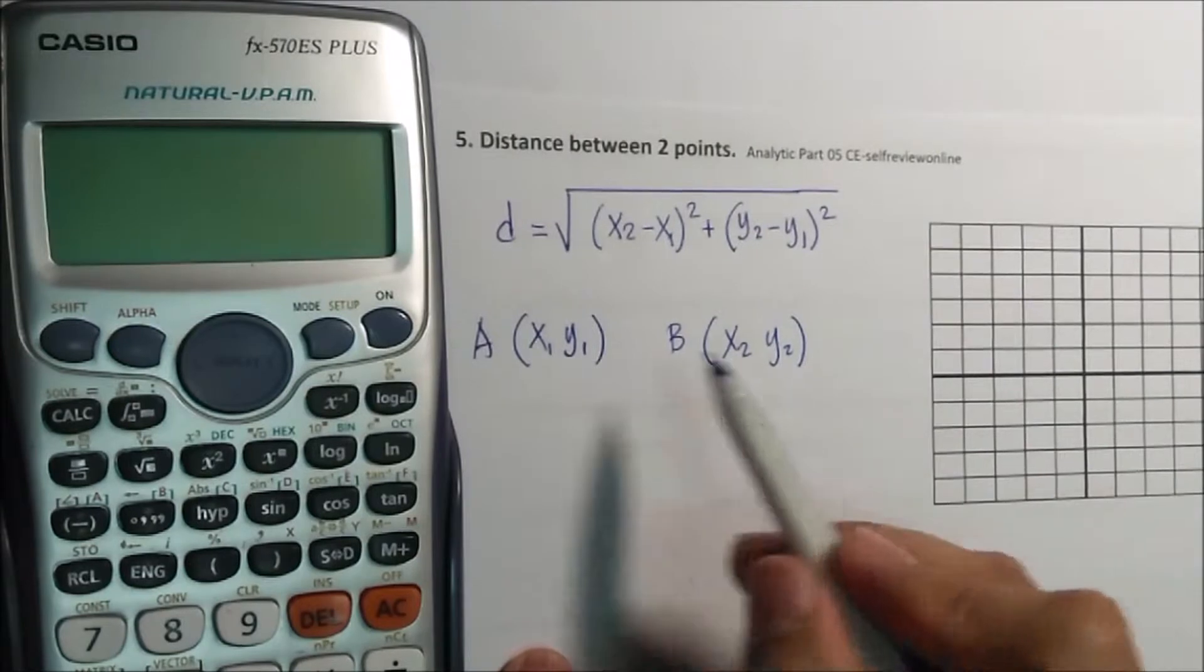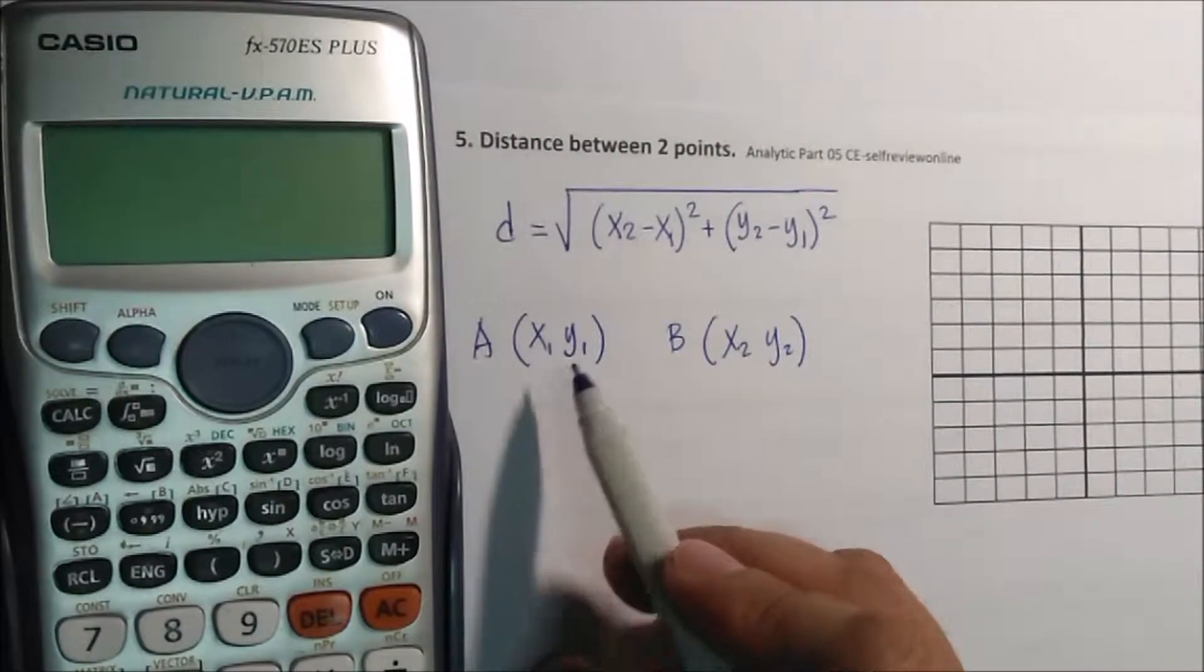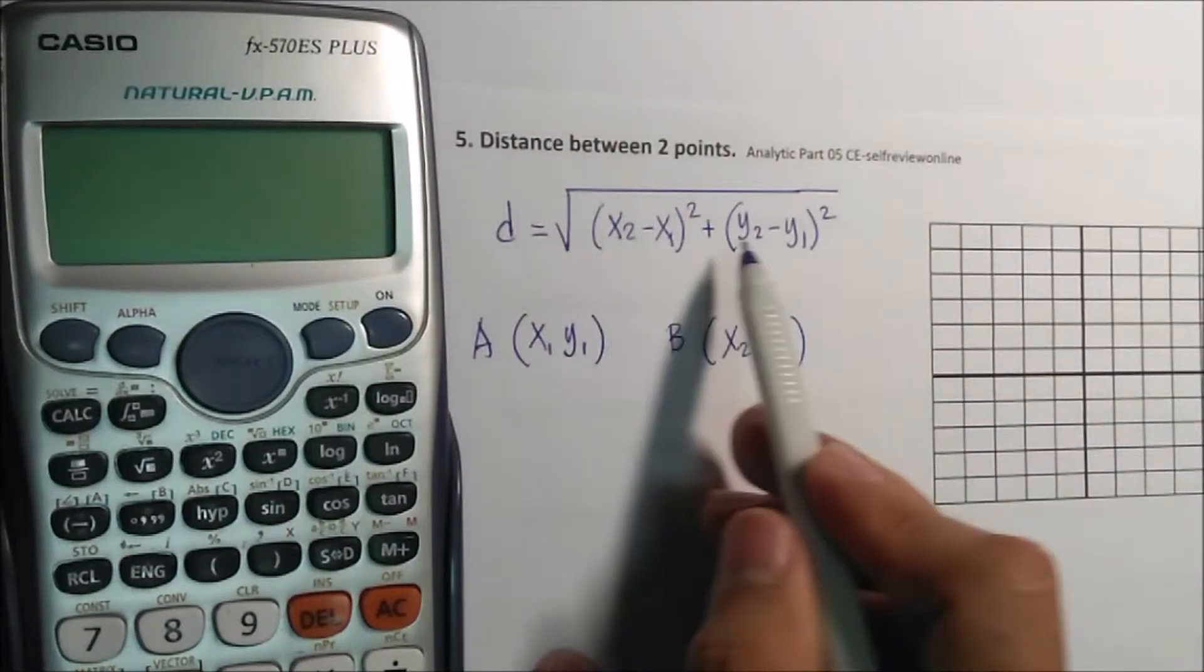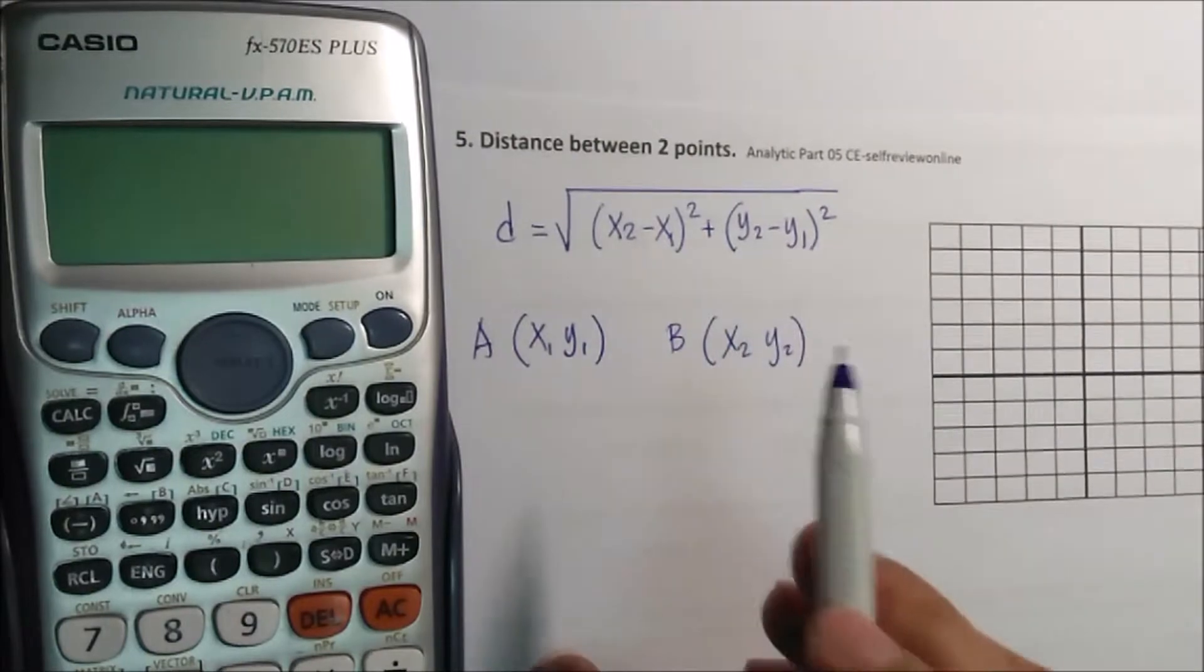If they can interchange, no problem. That will be x1 minus x2, y1 minus y2.